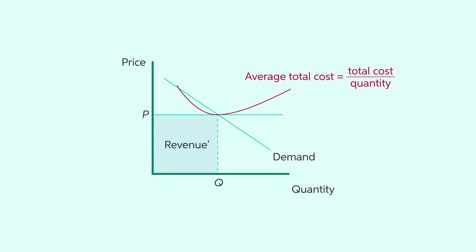The firm's earnings are represented by box PQ, which also touches the minimum of the average cost line. Why is that the case?